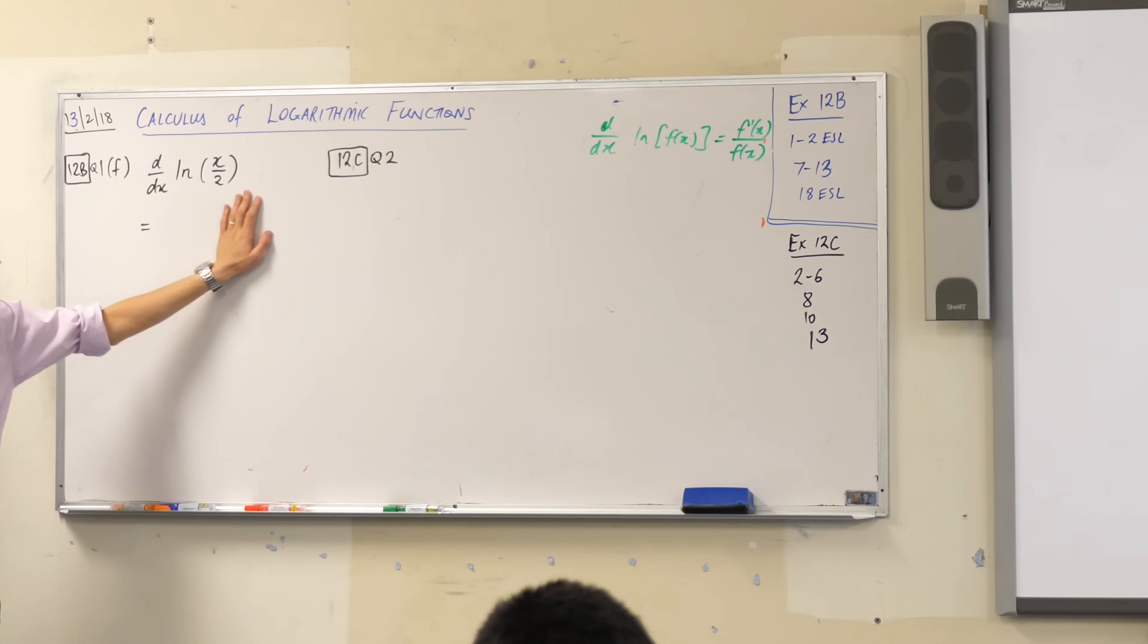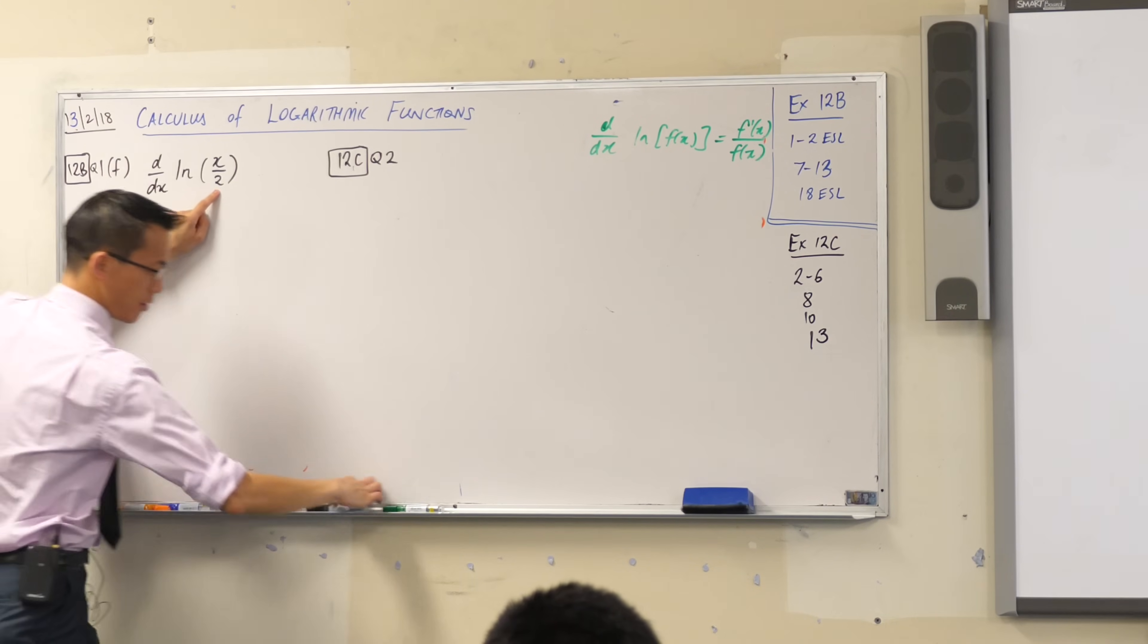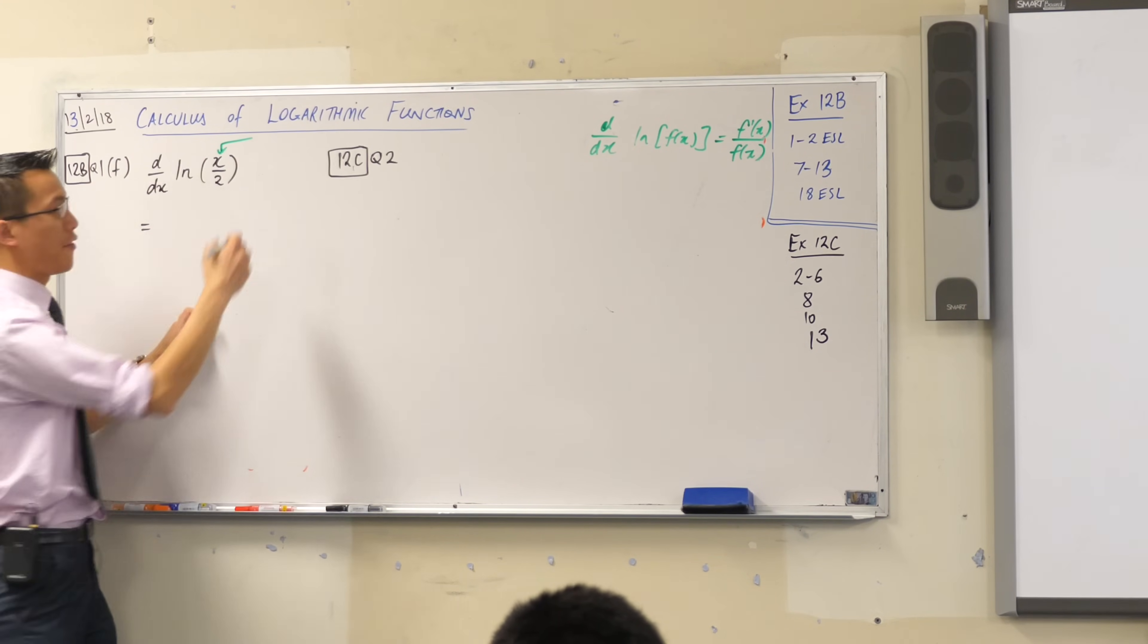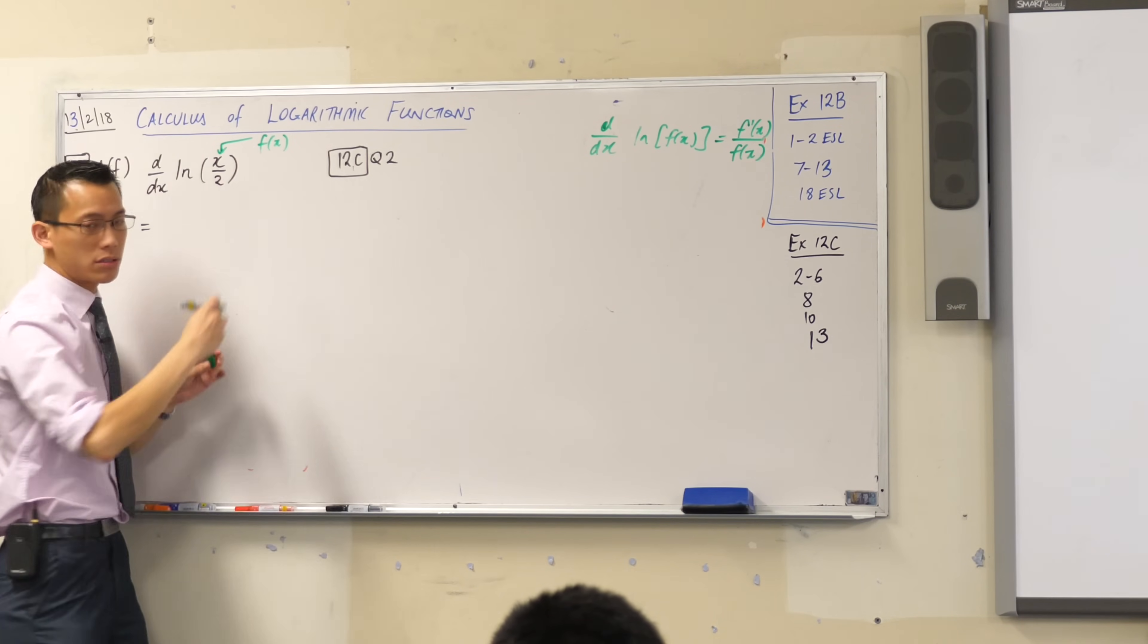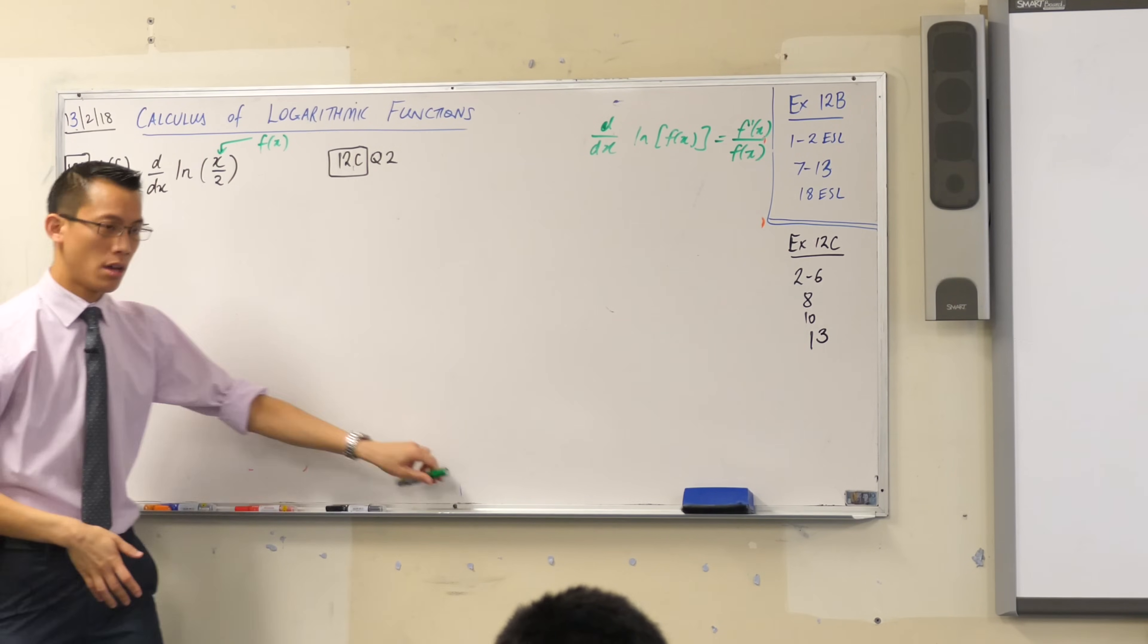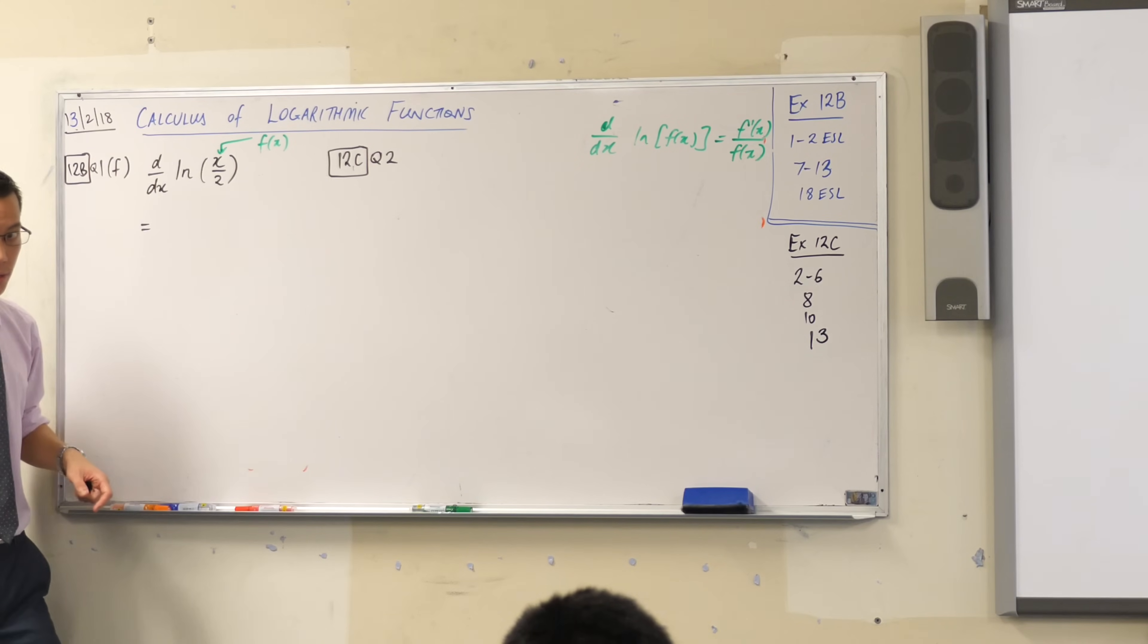Now have a look here. This is my f of x in here, the guy inside there, that's f of x. So x on 2, that's a half multiplied by x. What's f dash in this case? It's just a half, that's what's going on the top of my numerator. You can see even though it seems a bit overkill, I put brackets around this half. Can anyone tell me why I've done that?